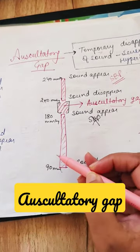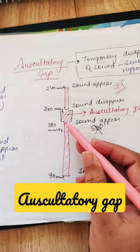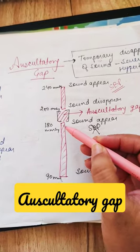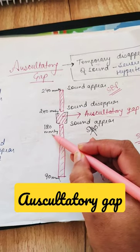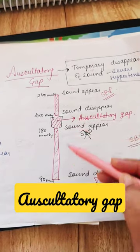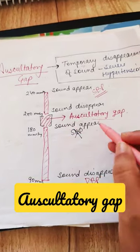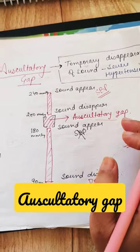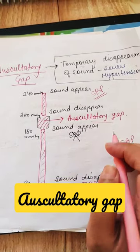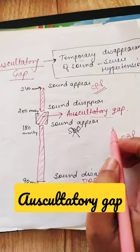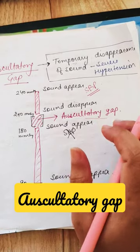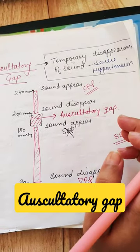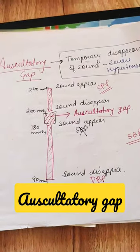If you only use auscultation, you can miss the real systolic value and incorrectly interpret it as 180. To avoid this, the palpatory method is done first before auscultation. You find the systolic value by palpation first, then proceed with auscultation.